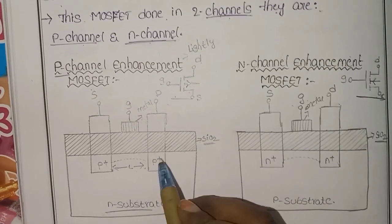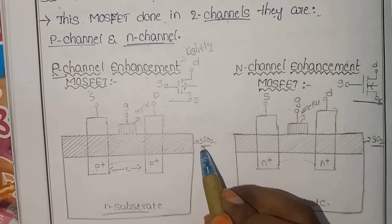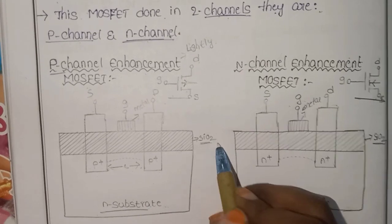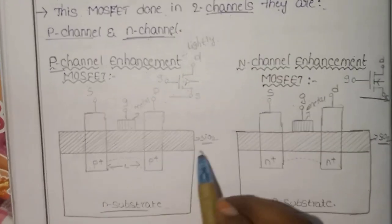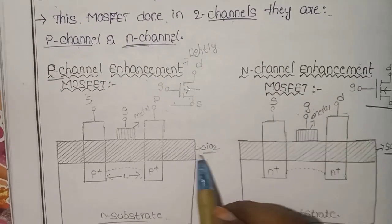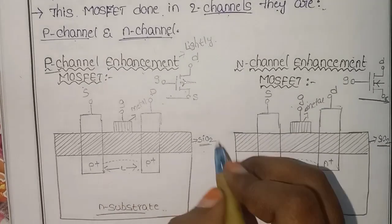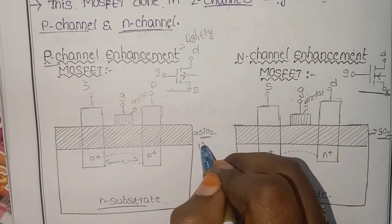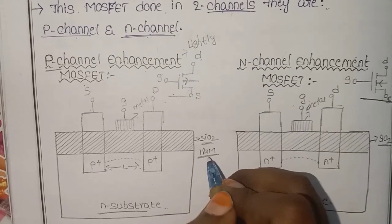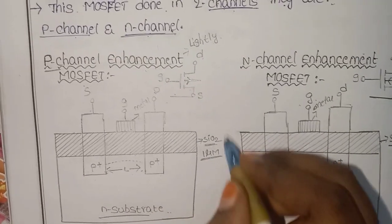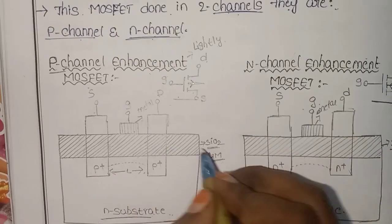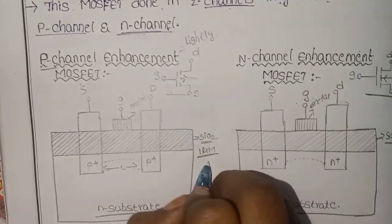Above the N-substrate, the silicon dioxide layer is formed. In this MOSFET, the width is 1 µm. The thickness of the SiO2 layer is 1 µm.